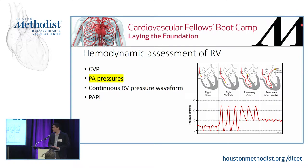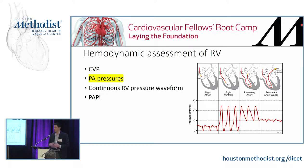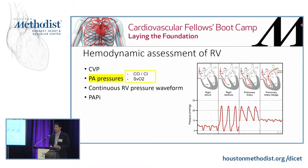PA pressures aren't that great in and of themselves as a way to assess the RV in isolation. It would be like using your systemic pressures to evaluate LV function — not the best approach. PA pressures have their use in diagnosing acute situations like acute MR or protamine reaction. But when you have a PA catheter, the cardiac index and SVO2 are usually more useful when assessing ventricular function.